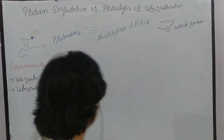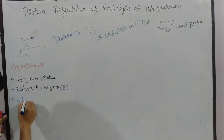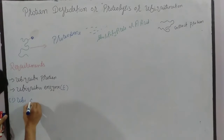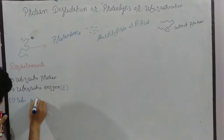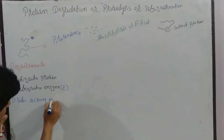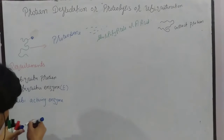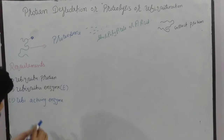The three ubiquitin enzymes involved are: first, ubiquitin activating enzyme, denoted as E1.